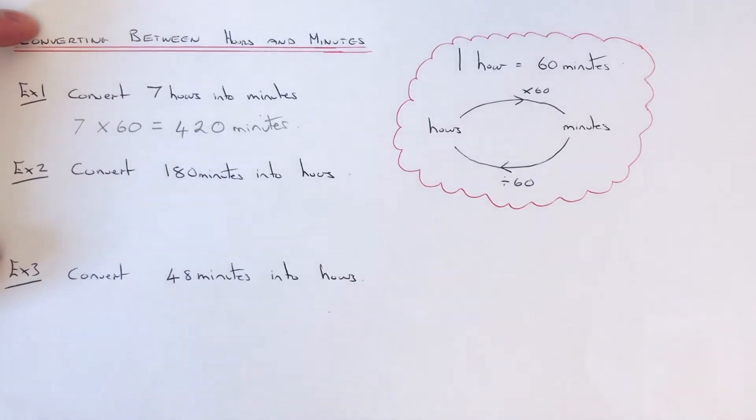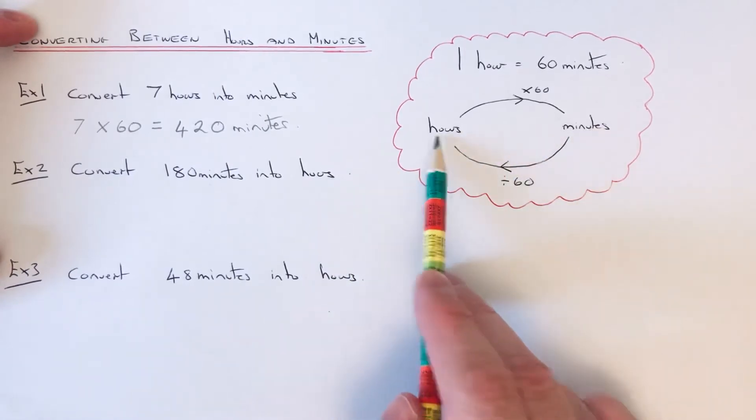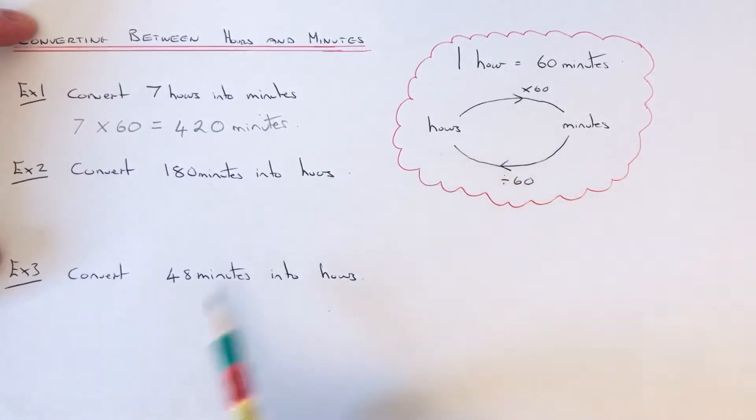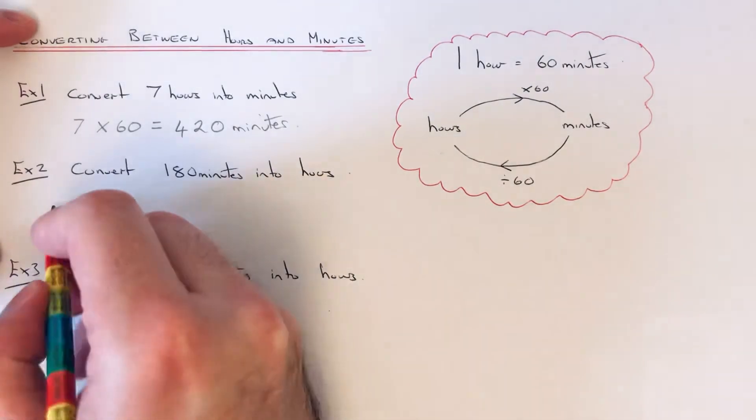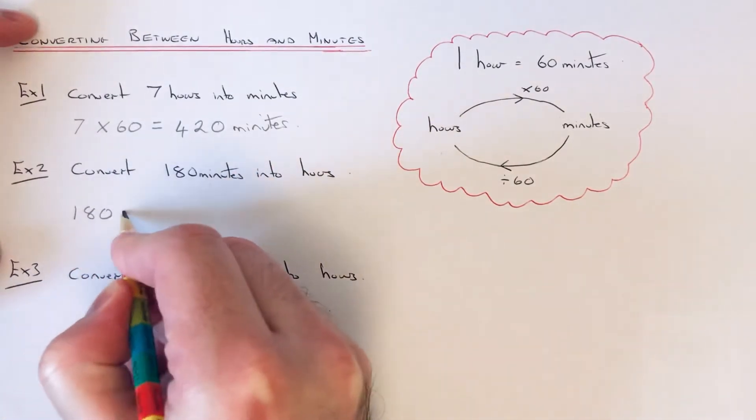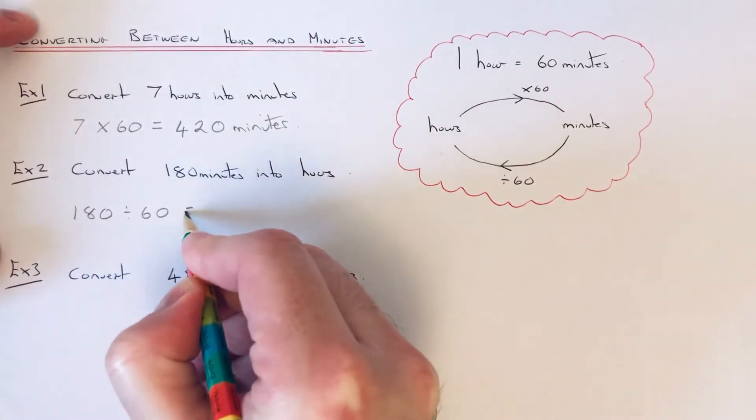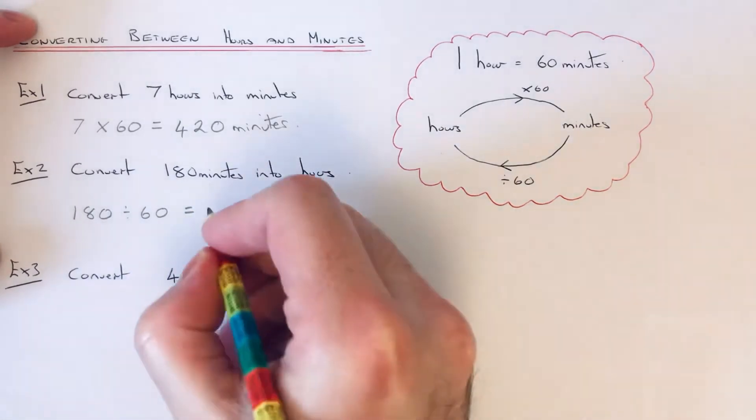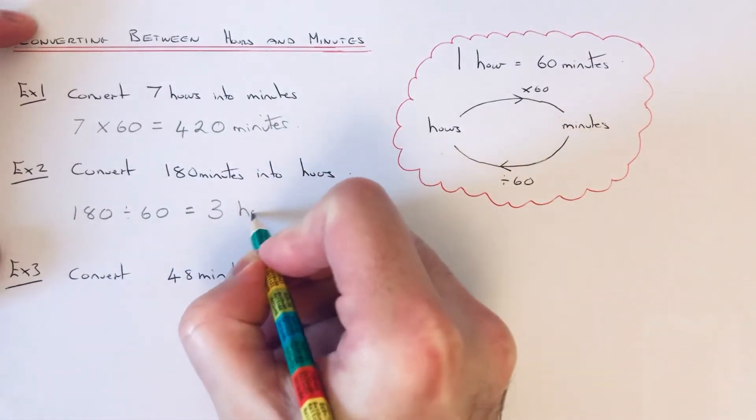Let's have a look at example two. We've got to convert 180 minutes into hours. So minutes into hours, you divide the number by 60. So 180 divided by 60, that goes three times, so that is 3 hours.